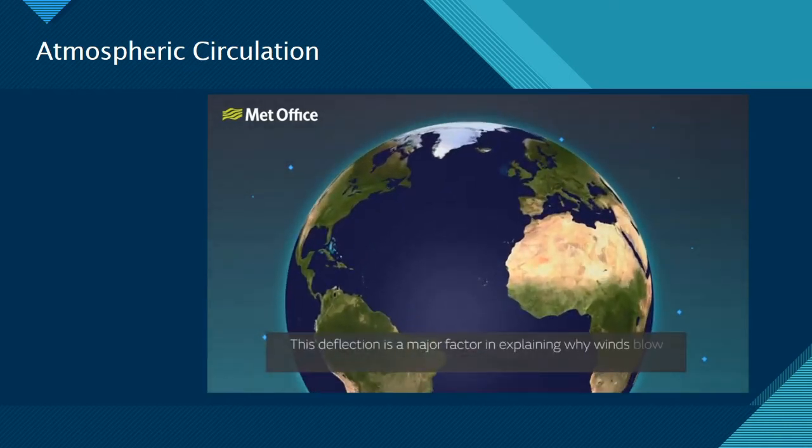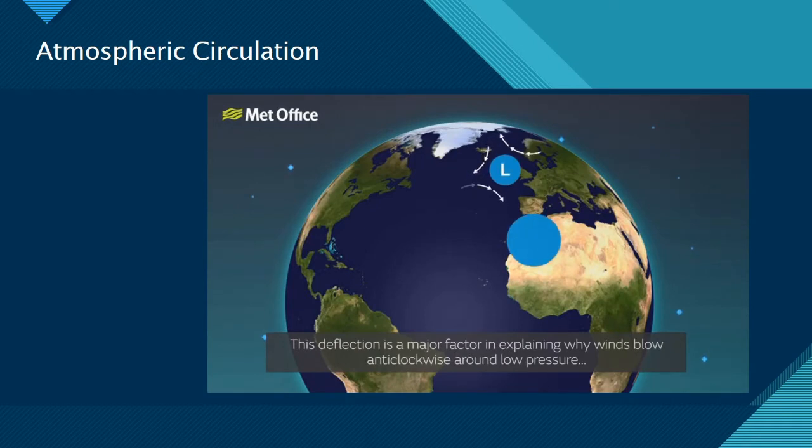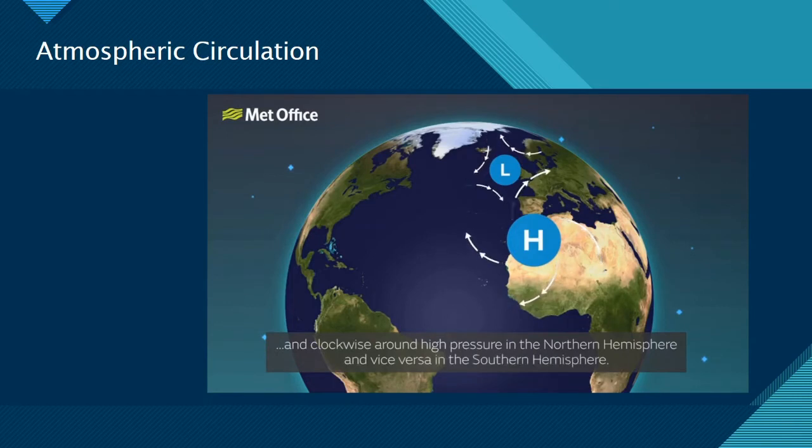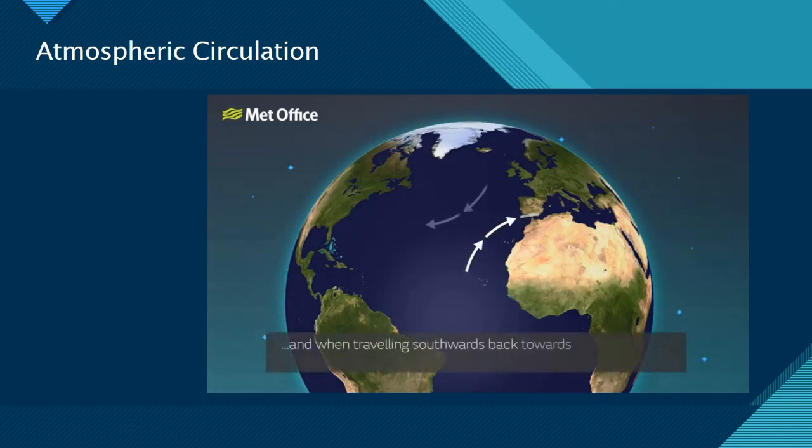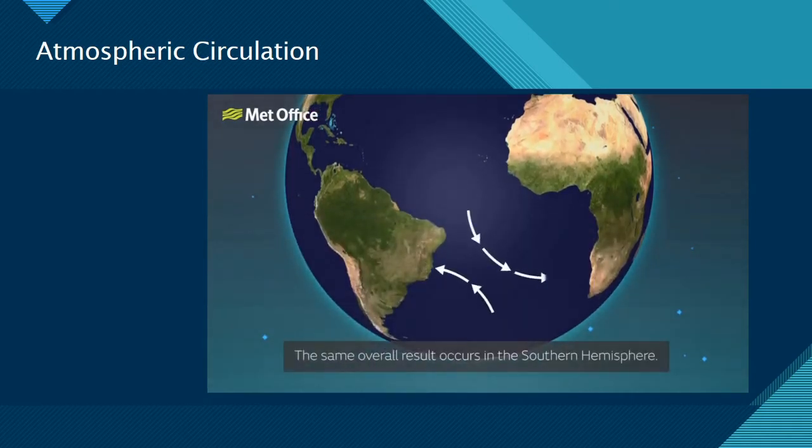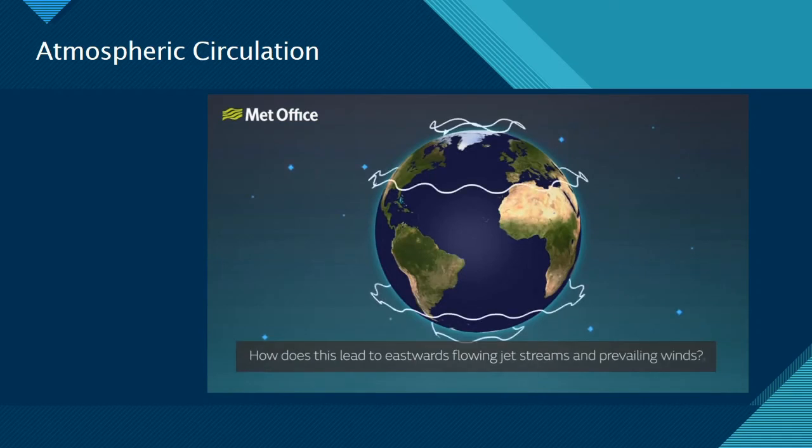This effect only happens on objects that are in motion. This deflection is a major factor in explaining why winds blow anti-clockwise around low pressure and clockwise around high pressure in the Northern Hemisphere and vice versa in the Southern Hemisphere. So when flowing towards the North Pole, air is deflected towards the East and when travelling southwards back towards the equator, it is deflected westwards. The same overall result occurs in the Southern Hemisphere.